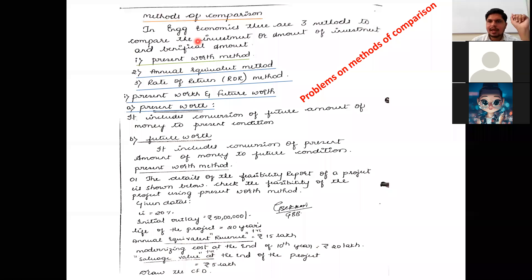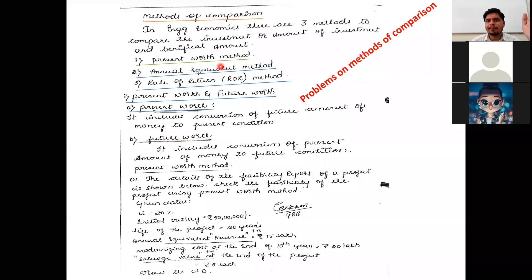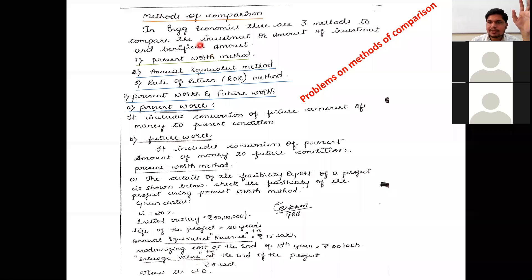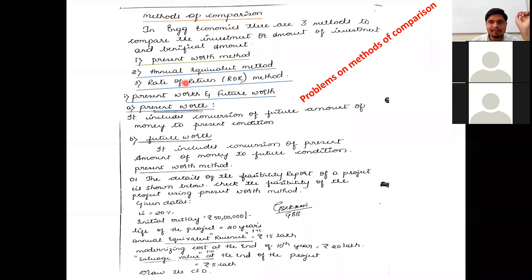The three methods to compare the amount of investment and benefit are: first, the Present Worth Method; second, the Annual Equivalent Method; and third, the Rate of Return (ROR) method.